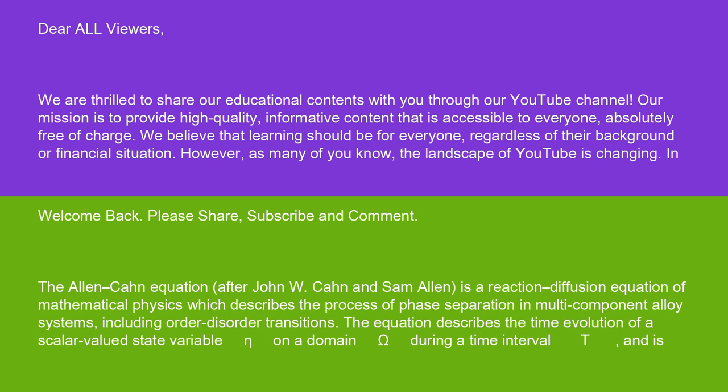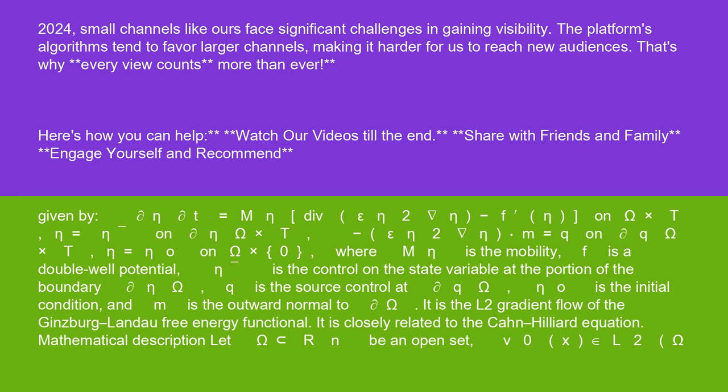The equation describes the time evolution of a scalar-valued state variable η on a domain Ω during a time interval T, and is given by ∂η/∂t = m(η) div(ε(η)² ∇η) - f(η) on Ω × T.